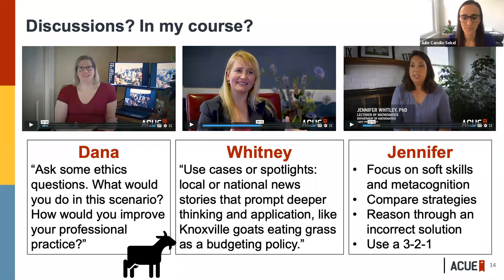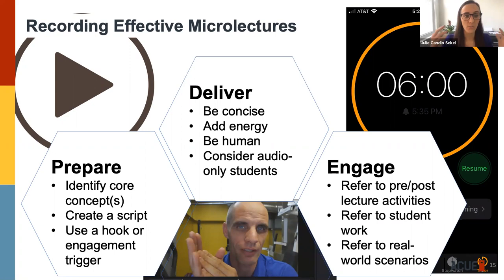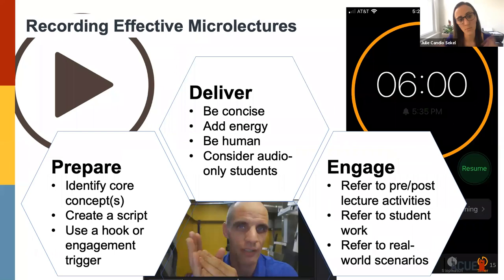Let me explain the 3-2-1 format again. You can do this with any type of discussion. For Jennifer's class, she asks students: three things you've learned in this unit, two examples of how you would apply this concept, and one thing you're still struggling with. There are different ways and different things you can assign to these 3-2-1 slots, but that is one example. By engaging students in these discussions, it's helpful for students to reflect and helpful for instructors to gather data to understand what students are struggling with and provide additional resources.